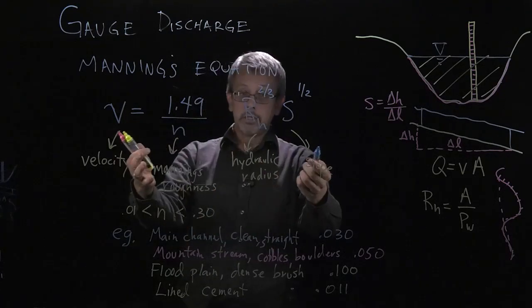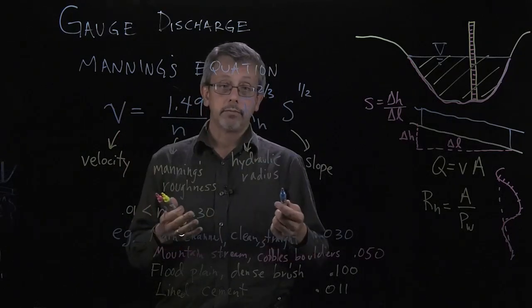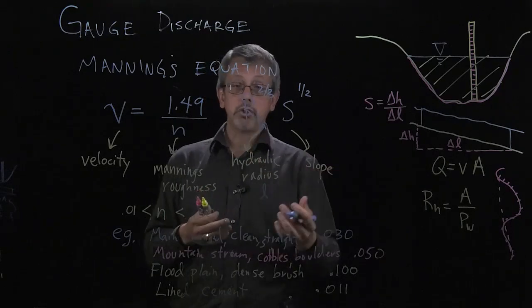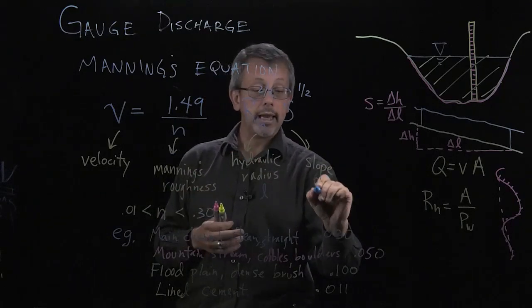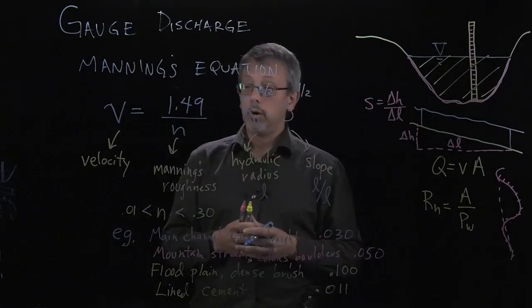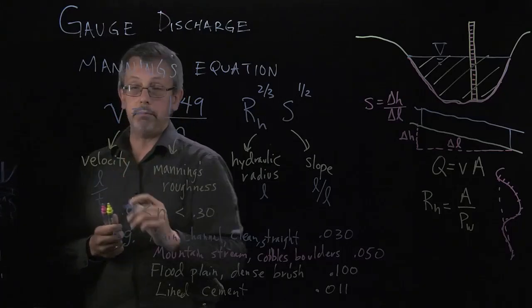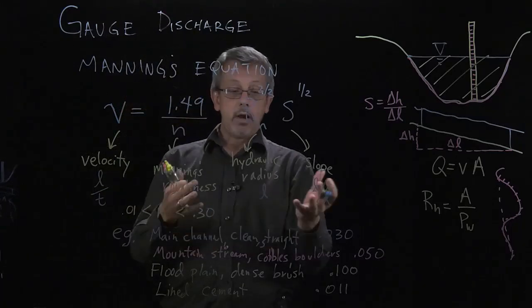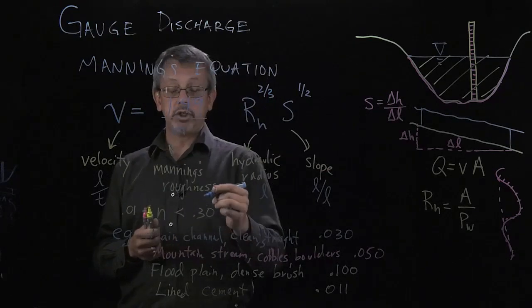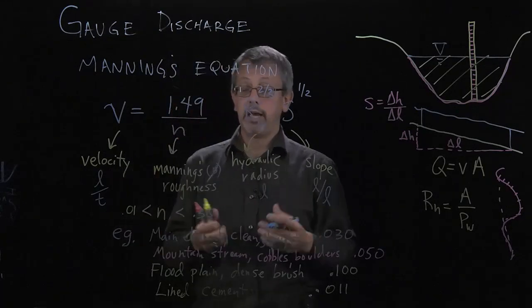Now one thing about this equation here is that the units don't balance. The units here, hydraulic radius, are going to be in length units. The slope units are going to disappear. It's usually length per length, so that's actually going to be a unitless value. But this over here, our velocity is going to be length per unit time. And our Manning's roughness is also a unitless value. It actually doesn't have any units to it. It's just a coefficient, just a value or a number.